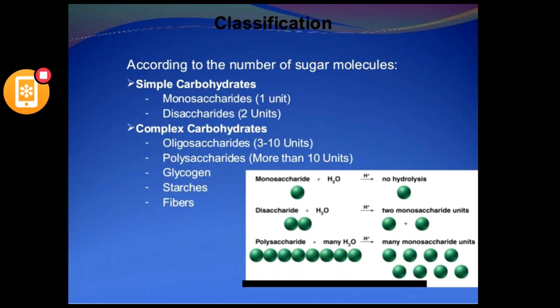Classification: based on the number of saccharides present in the compounds, we can classify carbohydrates into monosaccharide, disaccharide, oligosaccharide, and also polysaccharide. Saccharide means sugar. Monosaccharide has only one sugar. When two sugars are joined together that is disaccharide. Oligosaccharide has three to ten saccharides, and polysaccharide has more than ten. Based on structure we can classify them accordingly.